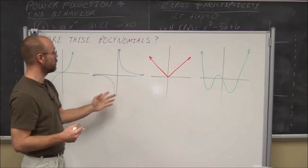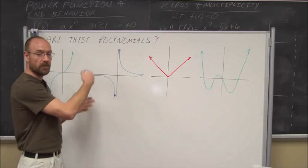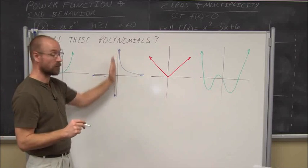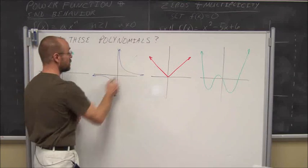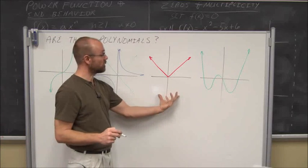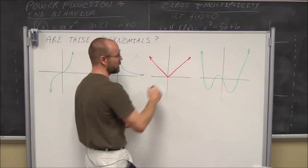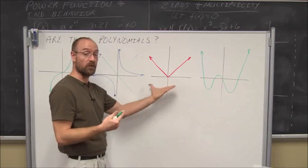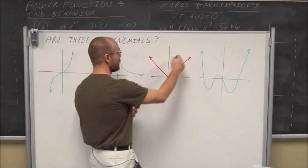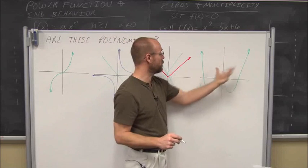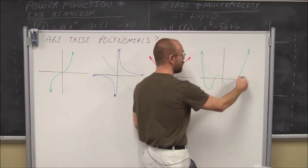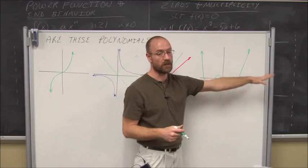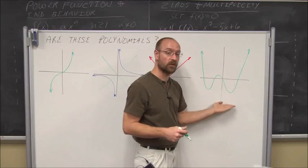Looking at some graphs: the first one — a smooth curve where I wouldn't have to lift my pen, with domain continuing to both infinities — is a polynomial. The second has two separate pieces requiring lifting the pen, so there's a domain restriction — not a polynomial. The third has a sharp turn, which we recognize as the absolute value function — not a polynomial. The fourth has nice smooth curves with no domain restriction — that's a polynomial.